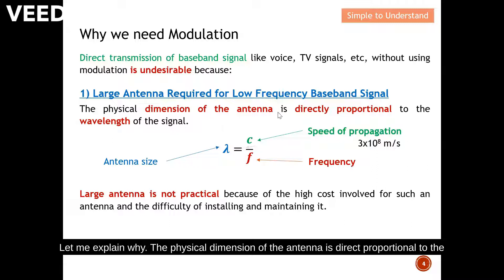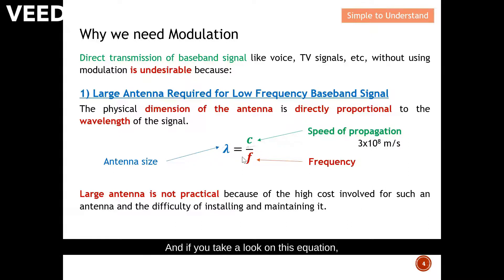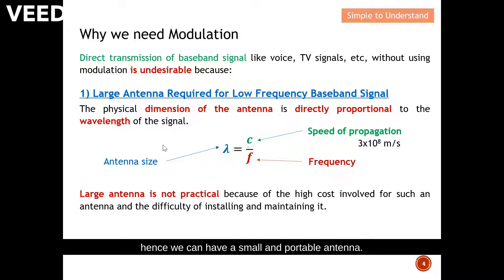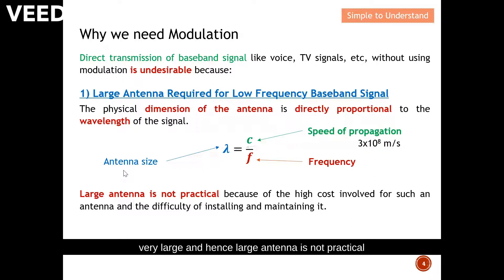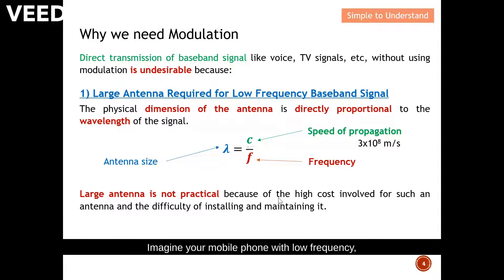The physical dimension of the antenna is directly proportional to the wavelength, meaning the antenna size is related to the wavelength. Looking at the equation: the higher the frequency, the smaller the wavelength, and hence we can have a small and portable antenna. If we have a very low frequency, the wavelength becomes a large number, so the antenna size is very large. A large antenna is not practical due to high cost, difficulty of installation, and maintenance. Imagine your mobile phone with low frequency — the antenna size would increase significantly.